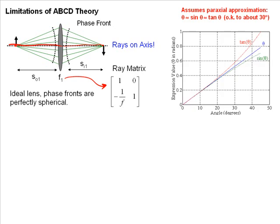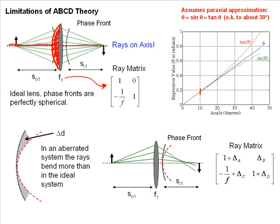It also assumes the paraxial approximation, so that the angle the beam makes coming in and hitting the lens is such that theta equals sine of theta equals tangent theta, which is good to about 10 degrees and okay to about 30 degrees. That means, of course, if you have a very strongly curved lens like this, that the ABCD theory is questionable to apply to a laser beam for tight focusing.